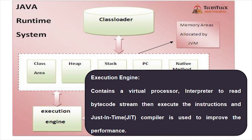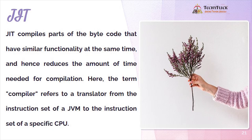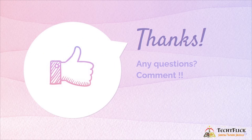The execution engine contains a virtual processor, an interpreter to read the bytecode stream and execute the instructions, and a Just-In-Time (JIT) compiler. JIT is used to improve performance — it compiles parts of the bytecode that have similar functionality at the same time, reducing the amount of time needed for compilation. The term compiler here refers to a translator from the instruction set of a JVM to the instruction set of a specific CPU. If you have any doubts, leave them in the comment section. Thank you.